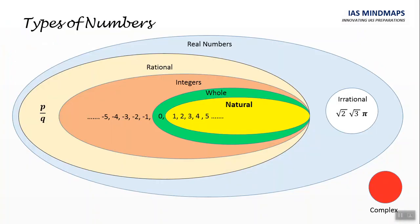Next is, these types of numbers. I have represented it in Venn diagram. Firstly, natural numbers. It includes 1, 2, 3, 4, 5 and so on.